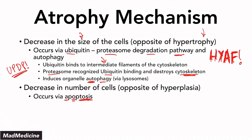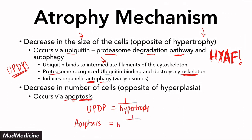To summarize: if you want to reverse hypertrophy, you're going to go through the ubiquitin proteasome degradation pathway, which is essentially the opposite of hypertrophy. And if you want to decrease the number of cells — if you want to reverse hyperplasia — you're going to go through apoptosis, which is programmed cell death, essentially the opposite of hyperplasia. That is how atrophy occurs.